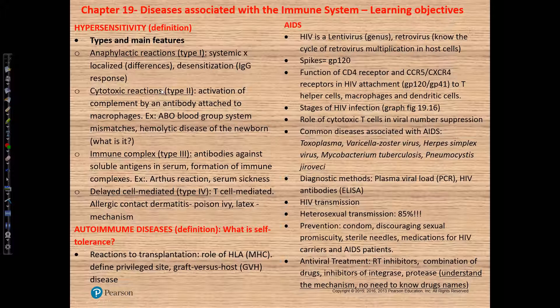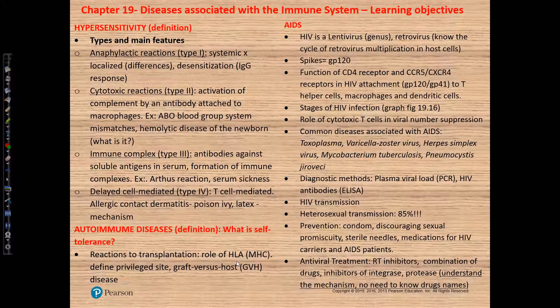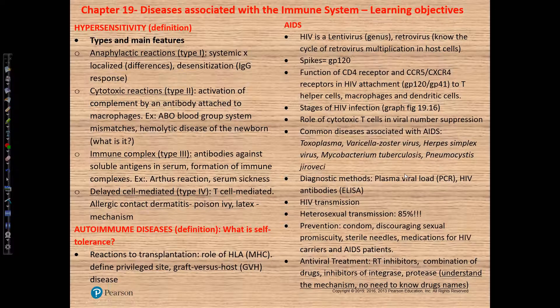Our learning objectives for chapter 19 include hypersensitivity, which we have four types. I will briefly describe in the second video the definition of autoimmune diseases, but we're not going to talk about them. I decided not to use this content for this course since autoimmune diseases are more related to immunology and less to microbiology. But we're going to talk a little bit about reaction to transplantation and the role of HLA. Then we're going to talk about AIDS a little deeper and understand the disease.